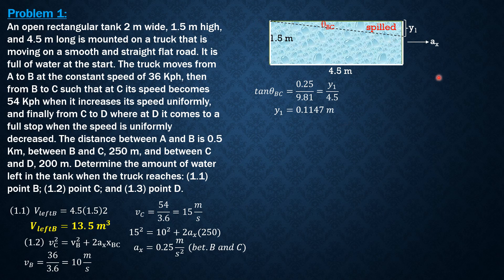Therefore, the volume left in the tank when the truck reaches point C is original volume, which is 13.5 cubic meters, minus this volume that will be expected to be spilled. And this volume is equal to 1/2 of 4.5 times Y1 times width perpendicular to the board which is 2 meters. So volume left at C equals 13.5 minus 1/2 of 4.5 times 0.1147 times 2. So volume left at C is equal to 12.98 cubic meters.